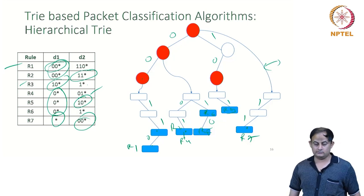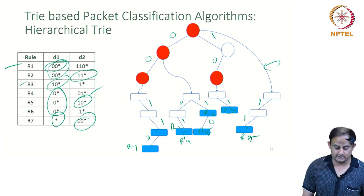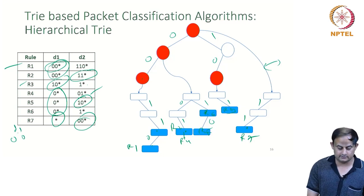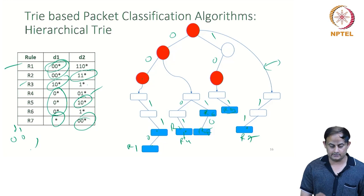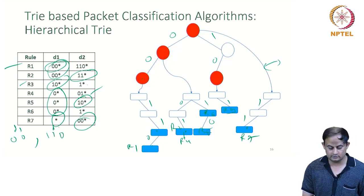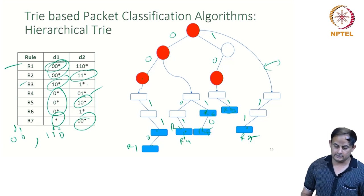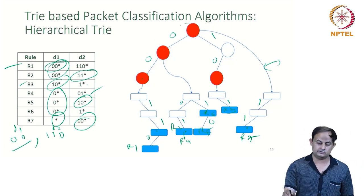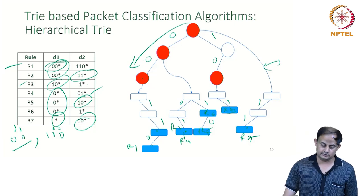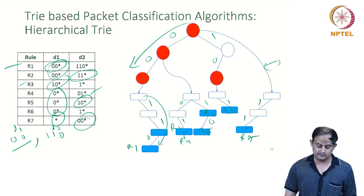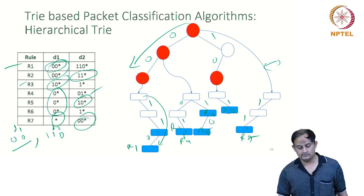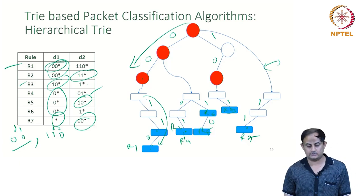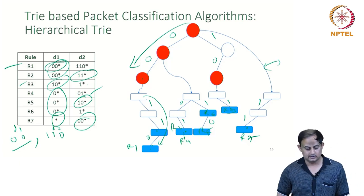Now let us try a lookup. Say the input is 00 for dimension D1 and 1,1,0 for dimension D2. For the two 0s I take the 00* path in D1. Then for 1,1,0 in D2 I take that path, and I see that rule R1 has matched.